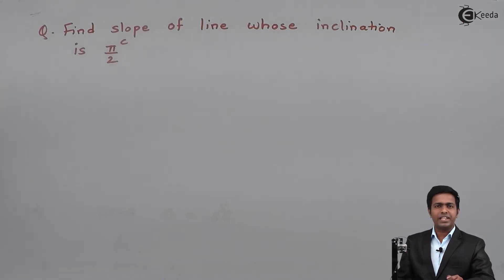Hello everyone. In this problem we have to find the slope of a line whose inclination is π/2 radians.